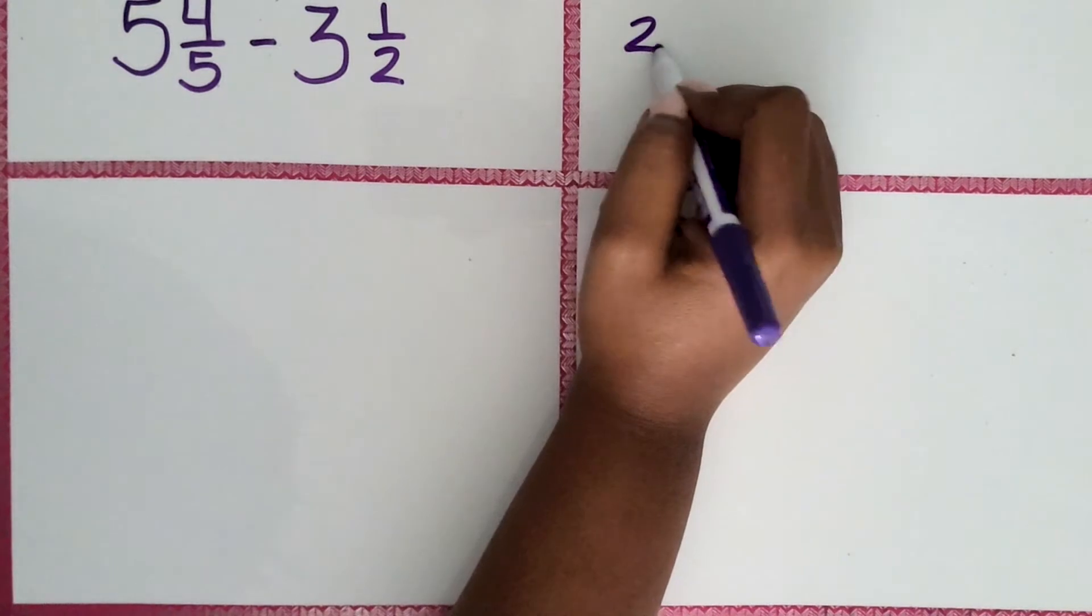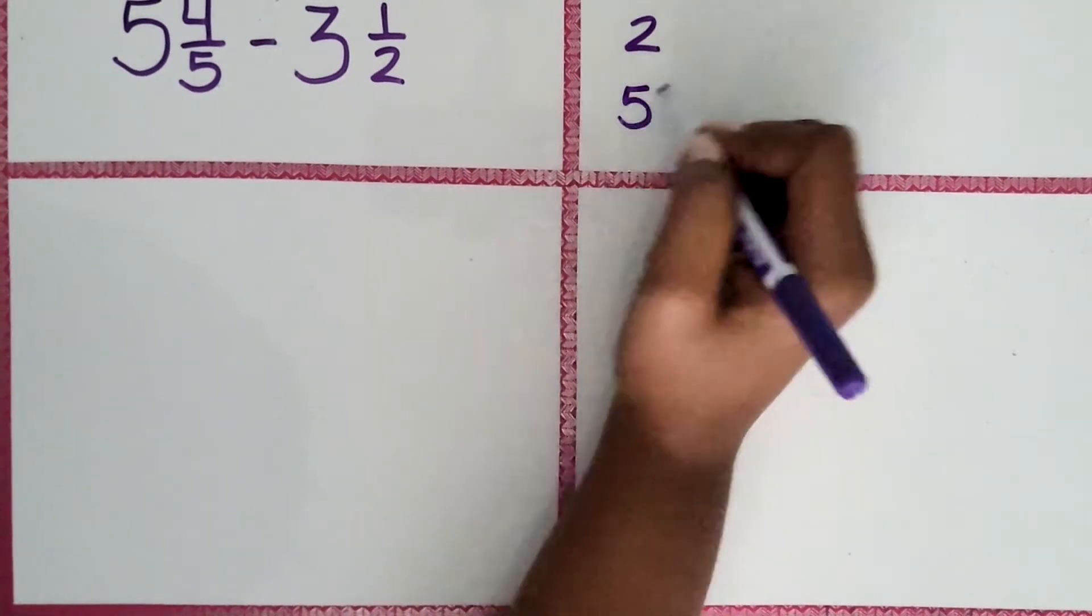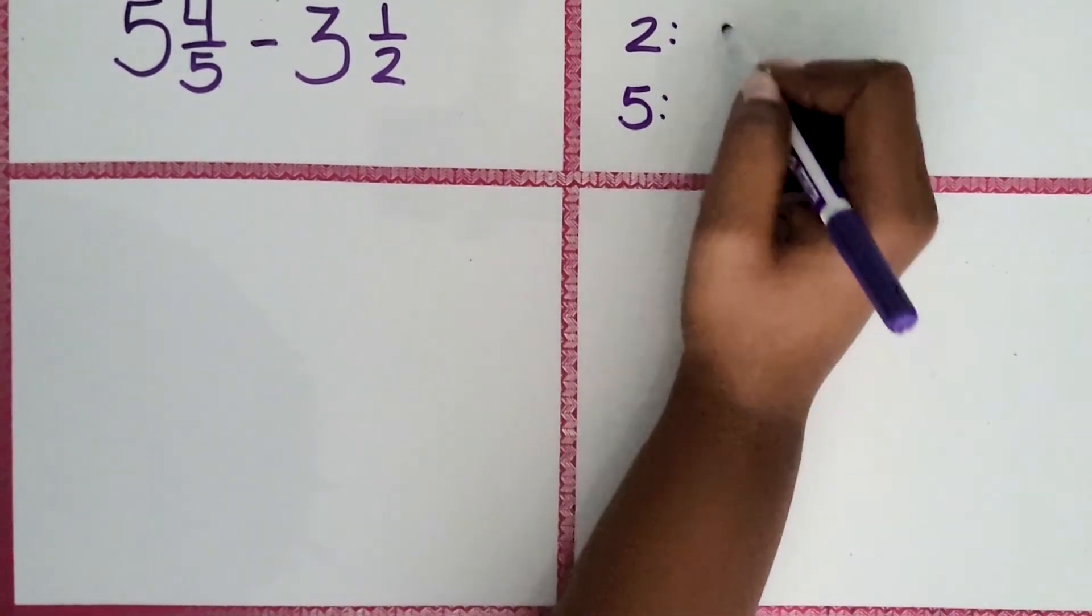Since our denominators are different, we can list out the multiples of 2 and 5 to see what they have in common.